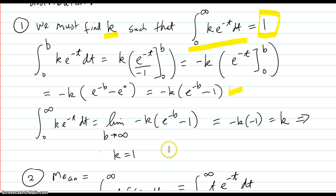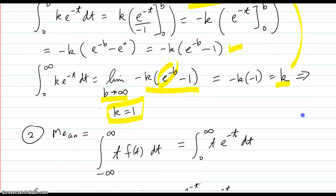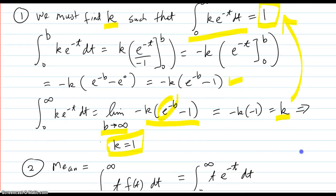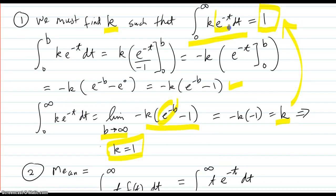It's the limit as b goes to infinity of this, and it goes to zero. So it just goes to k. And if we want that to turn out to be one, then k equals one. So our function is just e^(-t).